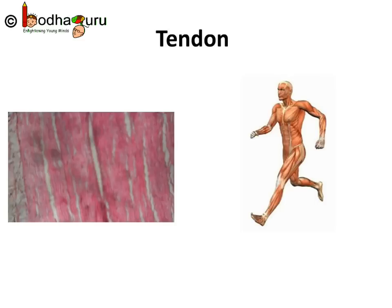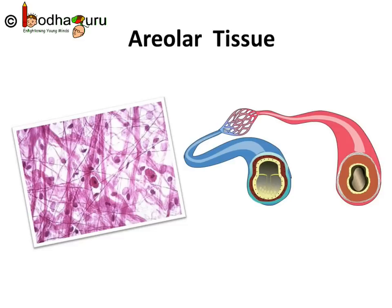Muscles are connected to bones with fibrous tendon tissues, so tendons are also connective tissues. Tendons have great strength but limited flexibility. There is also a tissue called areolar tissue, found between the skin and muscles, around blood vessels and nerves, and in the bone marrow. It fills the space inside organs, supports internal organs, and helps in repair of tissues.